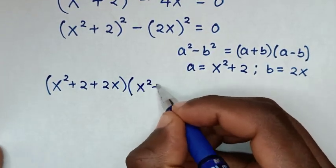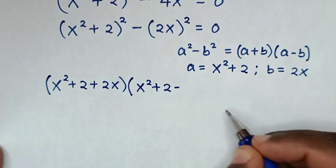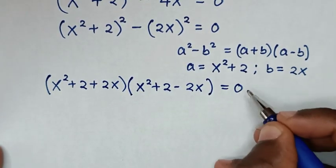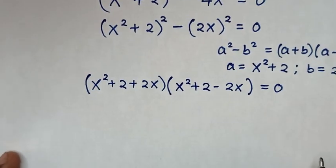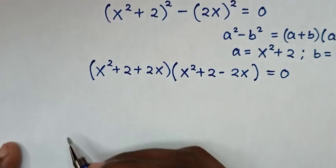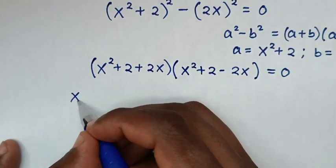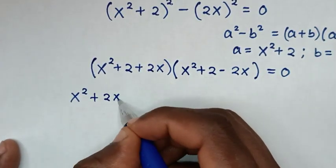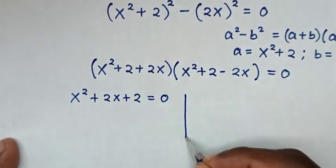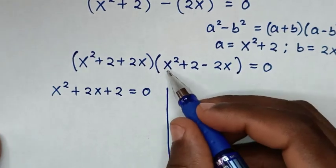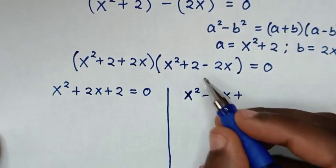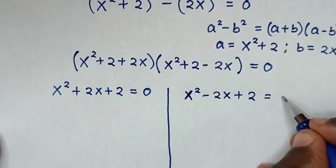So it will be (x squared plus 2 plus 2x) times (x squared plus 2 minus 2x) equals 0. From here we have two solutions: the first solution is x squared plus 2x plus 2 equals 0, and the second solution is x squared minus 2x plus 2 equals 0.